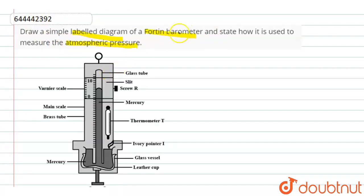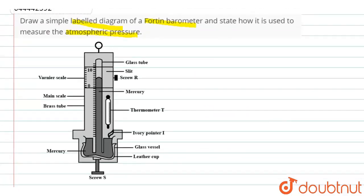The diagram for the Fortin barometer is as shown in the figure. To measure the atmospheric pressure, first the leather cup is raised up or lowered down with the help of a screw S, as shown in the figure, due to which the ivory pointer just touches the mercury level in the glass vessel.